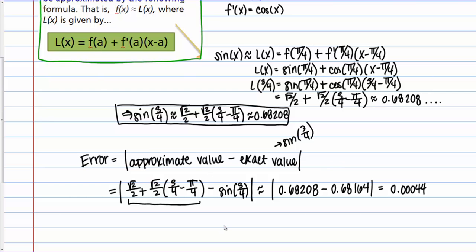Unfortunately in this case our error is actually an approximation in itself. Because I have these irrational numbers that I'm having to round. But in either case this is the process that you would use to find the error if you were asked to do so.